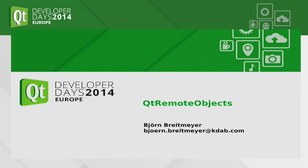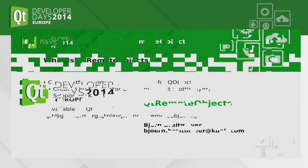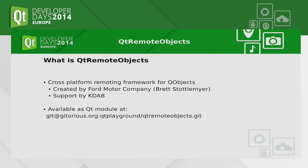What is Qt Remote Objects? Qt Remote Objects is a remoting framework for QObjects. You have a server side with an object, and you have the same object on the client — you have all the same properties, you get the signals, and if you invoke a slot on the client side object, it will be executed on the server.